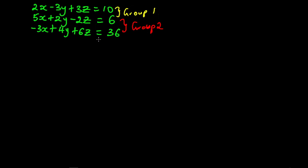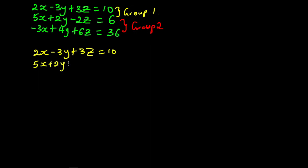After grouping them, we decide which variable we'll be eliminating first. From group one we have 2x minus 3y plus 3z equal to 10, and 5x plus 2y minus 2z equal to 6. Using the elimination method, if we want to eliminate x we equate the coefficients — so we multiply equation 1 by 5 and equation 2 by 2.